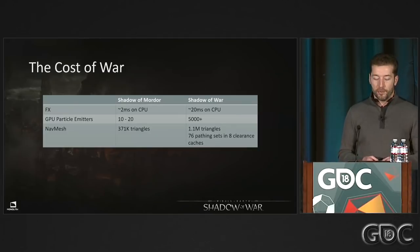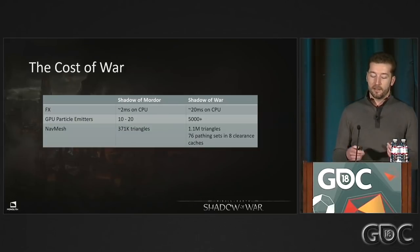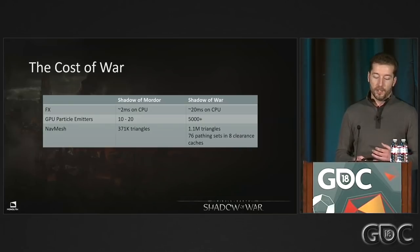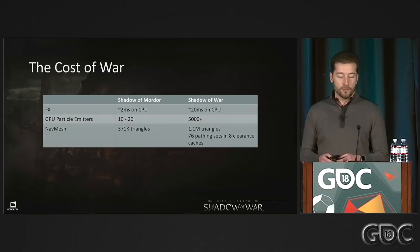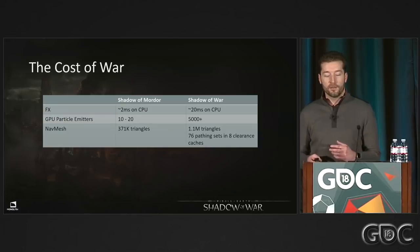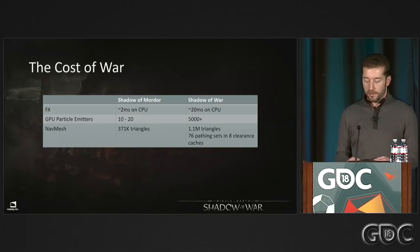We pushed other systems too. We increased our effects cost by about 10x. GPU particle emitters skyrocketed. Our maps are about three times bigger per zone compared to Shadow of Mordor, so our nav mesh is three times as big as well — and in both games the nav mesh spans the entire world.